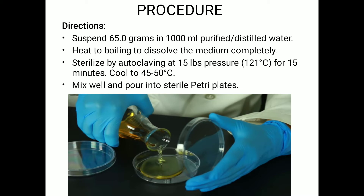After we measure the media, we need to heat or boil it in order to dissolve the medium completely. Sometimes this media might form clumps where it doesn't dissolve properly, so in order to dissolve the media we need to heat it to boiling. Then after that, we will go for autoclaving.